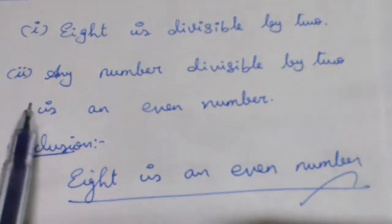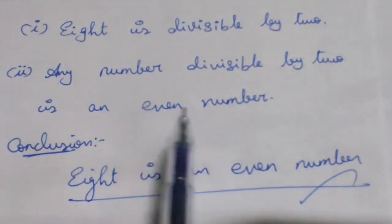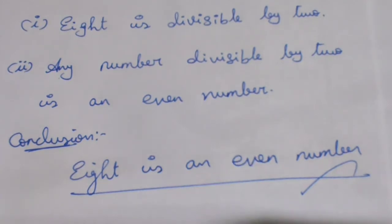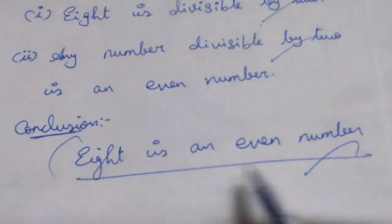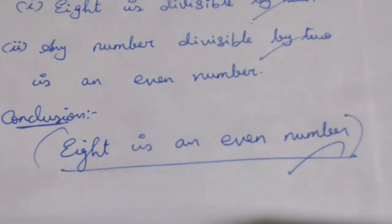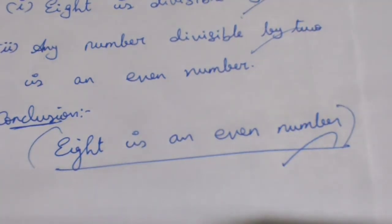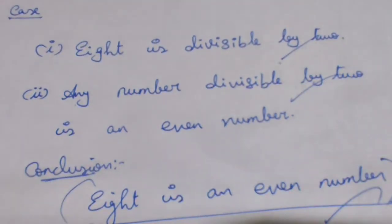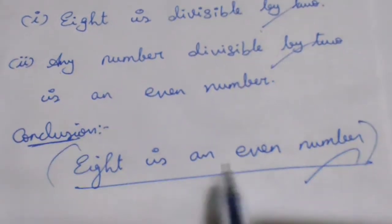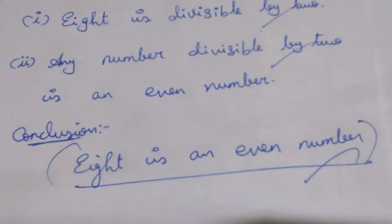So to summarize: 8 is divisible by 2. Any number divisible by 2 is an even number. Therefore, 8 is an even number. In this case we take a general case and apply it to a particular case. This is deductive reasoning. In deductive reasoning, the conclusion is accurate — there is no opposition.